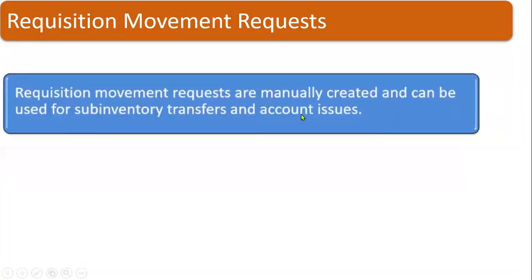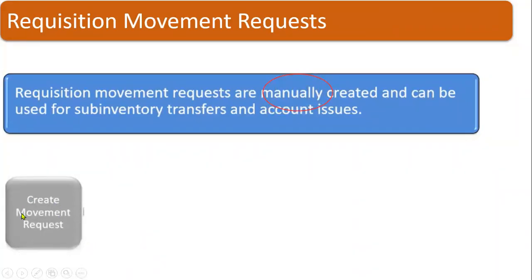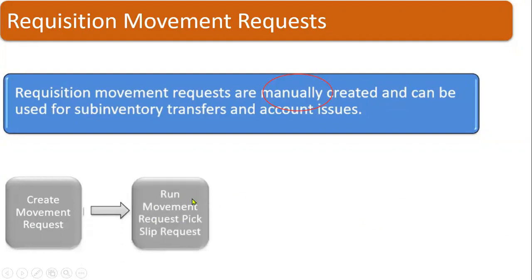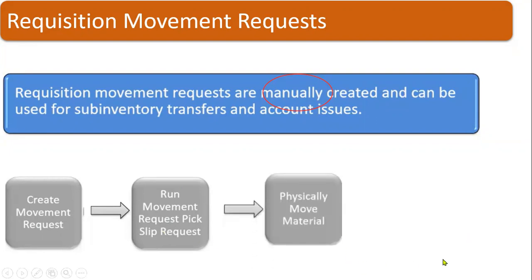First, what is a requisition movement request? Whenever we are trying to manually transfer goods from one sub-inventory to another sub-inventory, that is when we use a requisition movement request. The word 'manually' is important here. In this scenario, we first create the movement request, and then we run the movement request pick slip process.